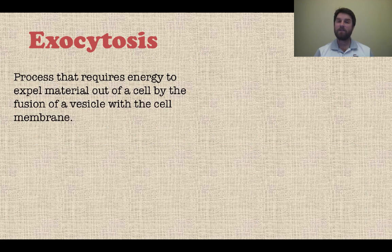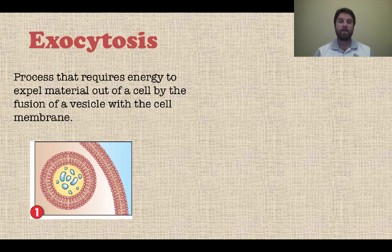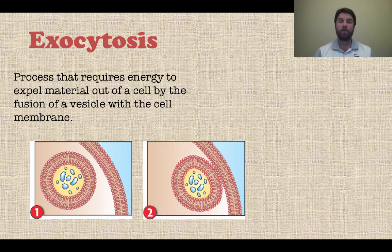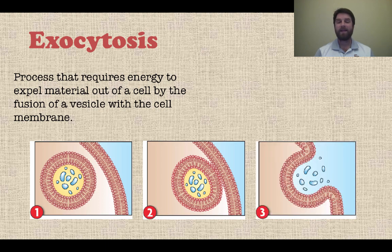The opposite of endocytosis is exocytosis. This requires energy because we are trying to expel something out of the cell. A vesicle forms with the substance you're trying to get out, fuses with the cell membrane, and then the membrane opens up and lets those things out. So exocytosis — stuff leaving the cell; endocytosis — stuff coming into the cell.